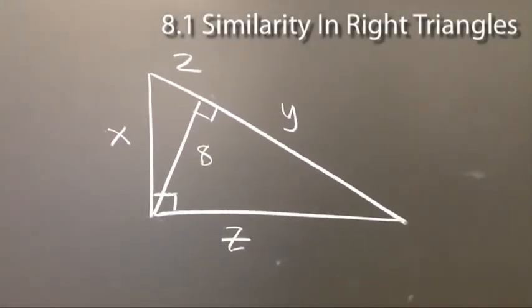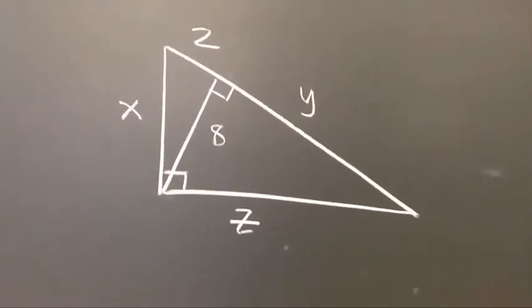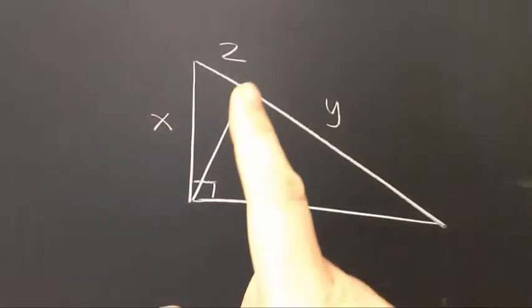So this is a right triangle and we have drawn an altitude that starts at the right angle vertex and goes to the hypotenuse.